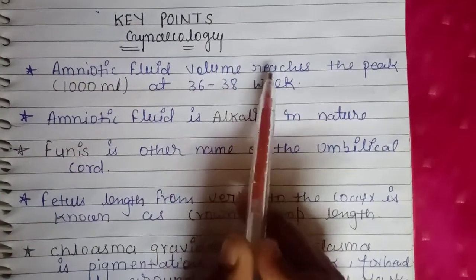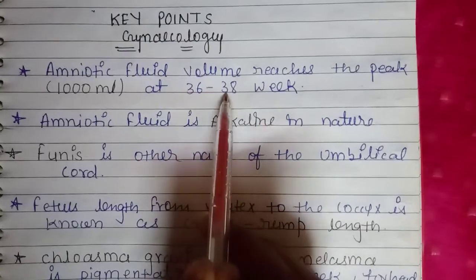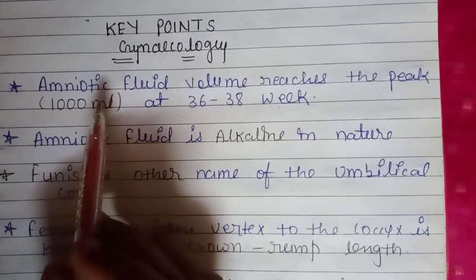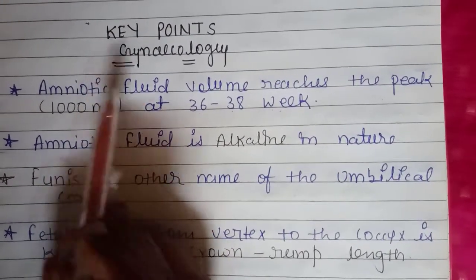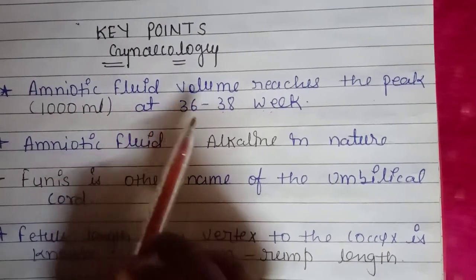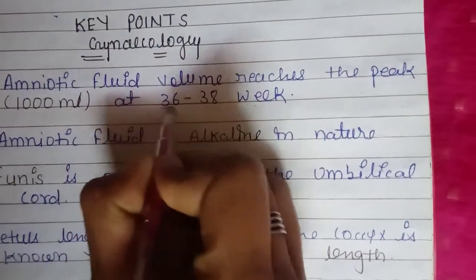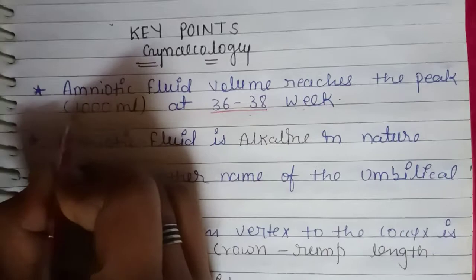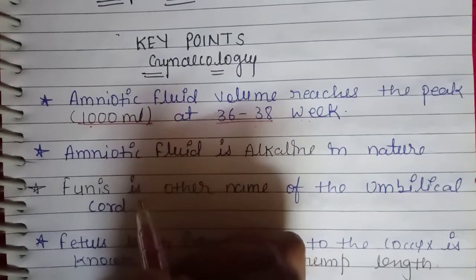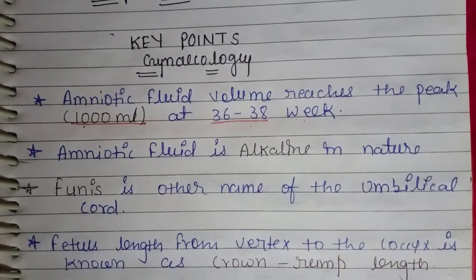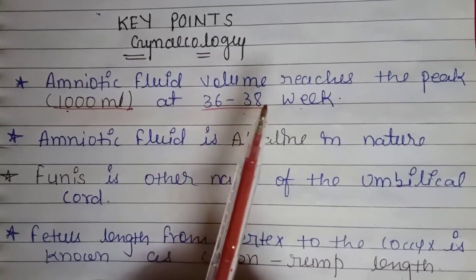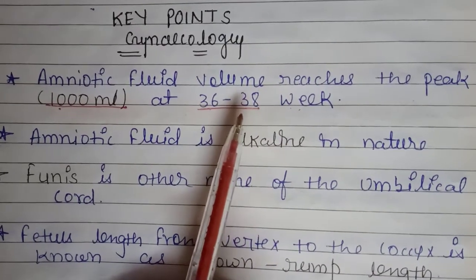Amniotic fluid volume reaches its peak at 36 to 38 weeks. This means the amount of amniotic fluid in the mother's womb, which provides protection to the fetus, is at its peak level during this period. The amount is about 1000 ml. So if you get a question about the amniotic fluid peak period, the answer is 36 to 38 weeks and approximately 1000 ml.